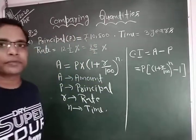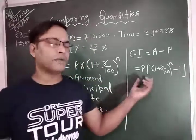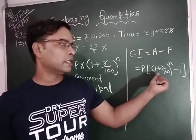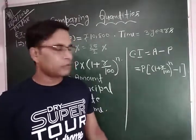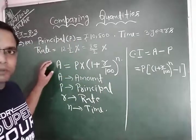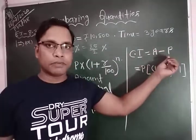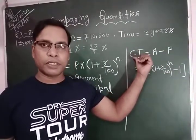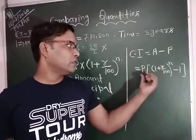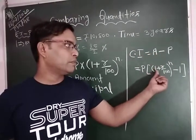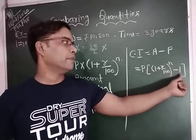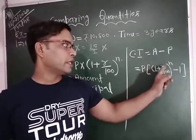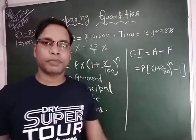Another formula to find compound interest is: CI equals P into (1 plus R by 100) to the power N minus 1. In this formula, we can also find compound interest directly. Both ways work — you can either find the amount first and subtract principal, or use this direct formula where N represents time, R represents rate, and P represents principal.